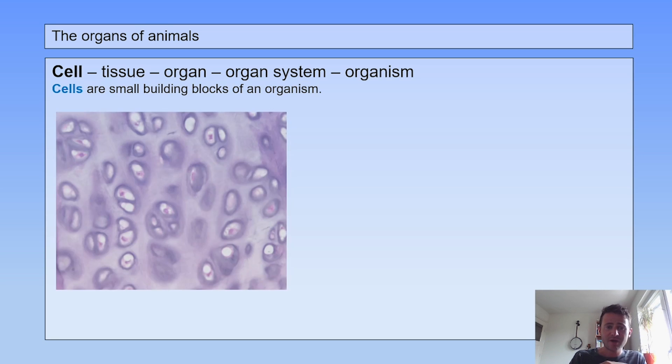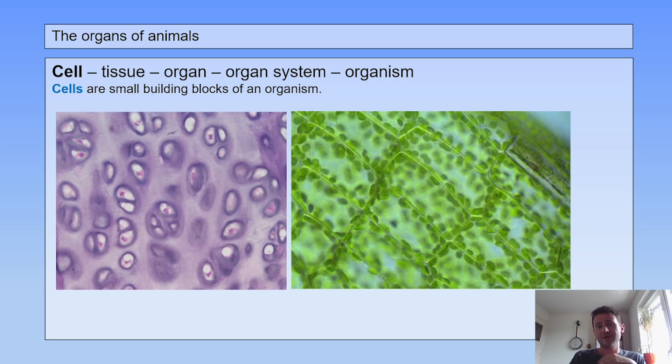Cells are small building blocks of an organism. On the left you see cartilage cells, you can find them in your nose, in your ears, between your ribs. On the right you see plant cells.